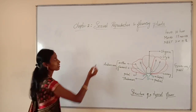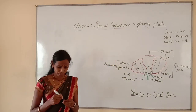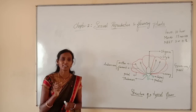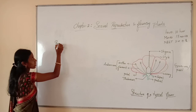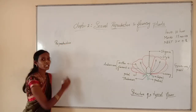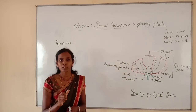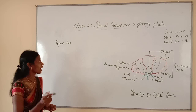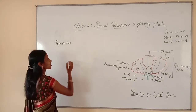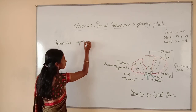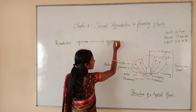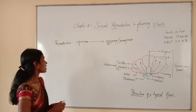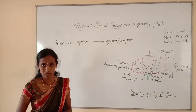First, we should know about reproduction. You are familiar with the term reproduction because you already studied it in the first chapter, reproduction in organisms, and even in the chapter on living world. Reproduction is a biological process in which organisms produce offspring of their own kind. All living organisms will be exhibiting this process, that is reproduction.